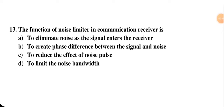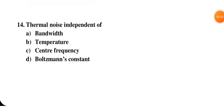The function of a noise limiter in a communication receiver is — to eliminate noise as the signal enters the receiver; to create phase difference between signal and noise; to reduce the effect of noise pulses; or to limit the noise bandwidth. The correct answer is C — to reduce the effect of noise pulses. Next: thermal noise is independent of — bandwidth, temperature, central frequency, or Boltzmann constant. C is the correct option — it is independent of central frequency.